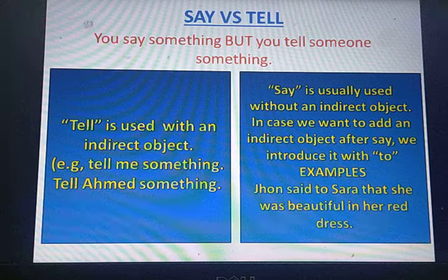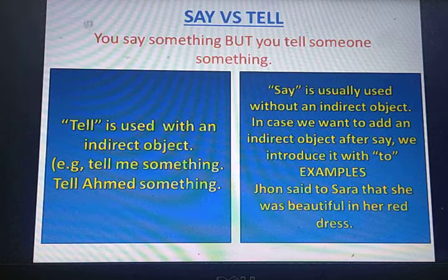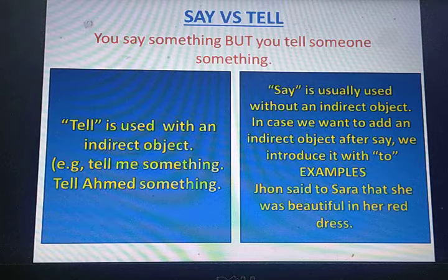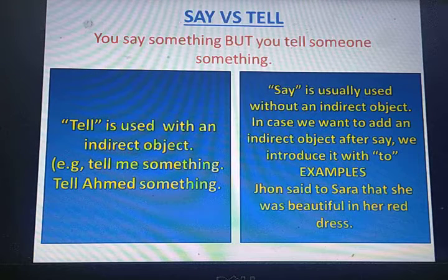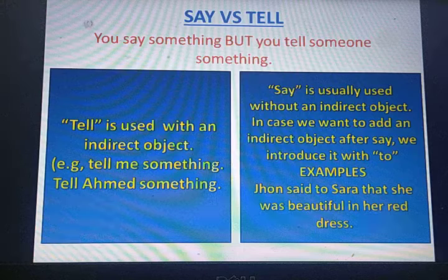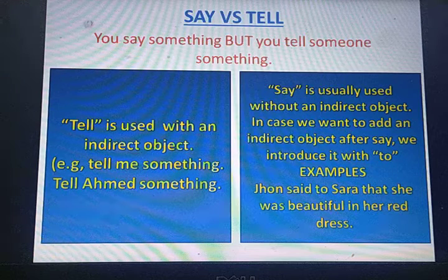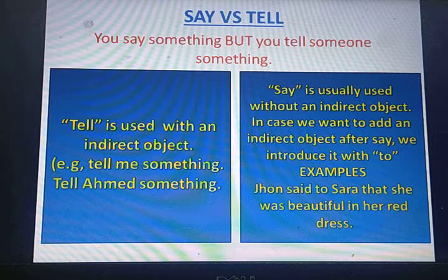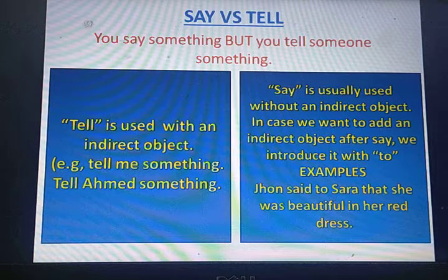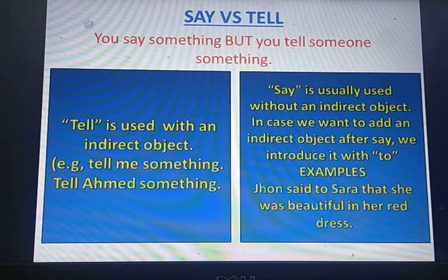Now look at the difference between tell and say. Tell is used with an indirect object. If you want to know what an indirect object is, please watch my video on direct and indirect objects, which I have already uploaded on my channel. For example: tell me something, tell Ahmed something. Here 'me' is the indirect object and 'something' is the direct object. We can also say 'tell me the truth.' So tell is used with an indirect object.